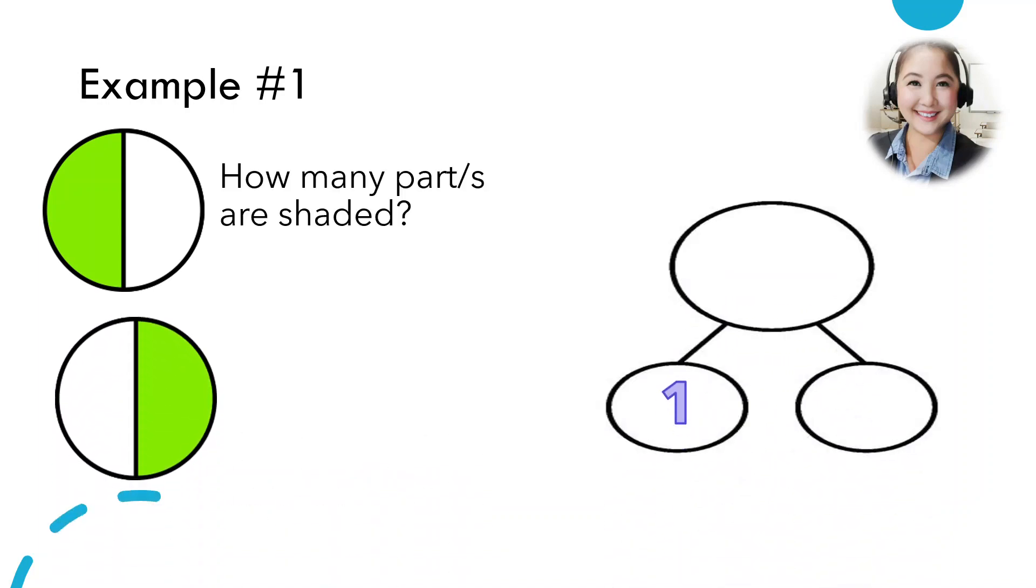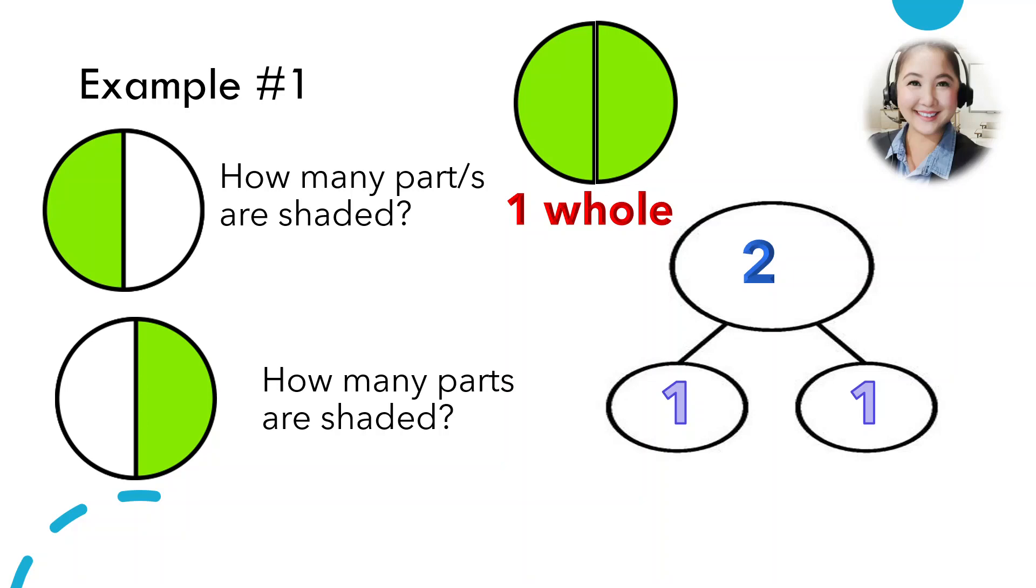and another circle. One part is also shaded. If we put together these two parts, we can have a whole. One whole. One whole pizza, one whole cake.